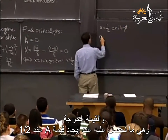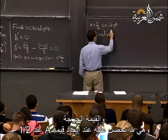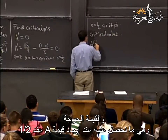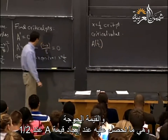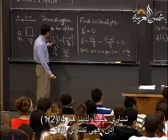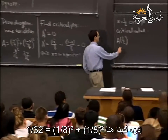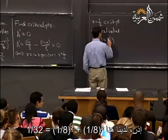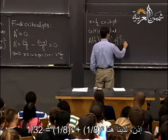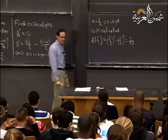The critical value — what you get when you evaluate A at x = 1/2 — is (1/2 divided by 4)², which is (1/8)², plus another (1/8)², giving 1/32.